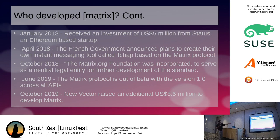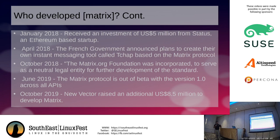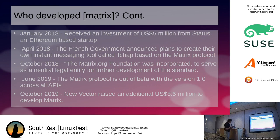The timing of this couldn't have been better for us at Southeast Linux Fest. October 2019, New Vector raised an additional $8.5 million to continue the development of Matrix. Now we have some real money in this idea of a decentralized communication system.